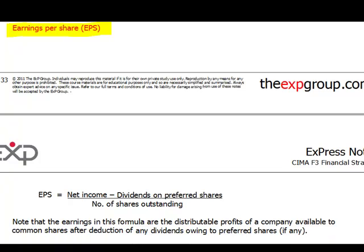First of all, earnings per share. This is a very important ratio, and you should be aware from your knowledge of F2 that there is an international financial reporting standard on it — IAS 33 Earnings Per Share. It explains how to calculate this ratio, and that shows how important it is, because there is no other single standard that talks about a ratio. This ratio is used for company valuations in the price to earnings ratio, and therefore it has to be clearly explained how to calculate it.